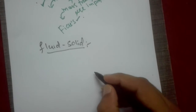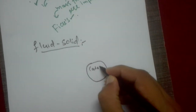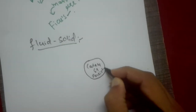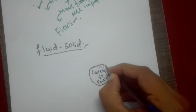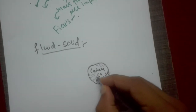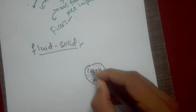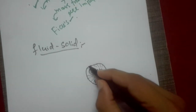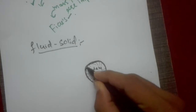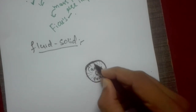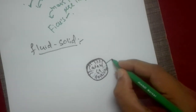For example, suppose this is our catalyst particle — a spherical catalyst particle. This is a porous catalyst; suppose there are some pores inside the catalyst. This is a porous, spherical catalyst particle having pores inside, and this is the surface of the catalyst.